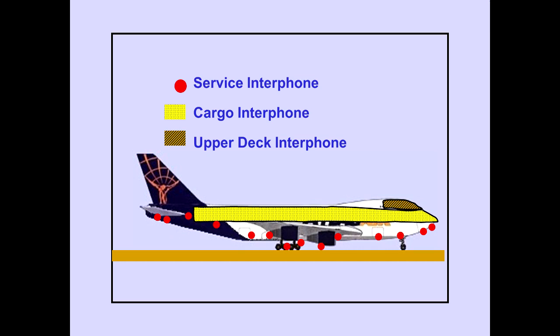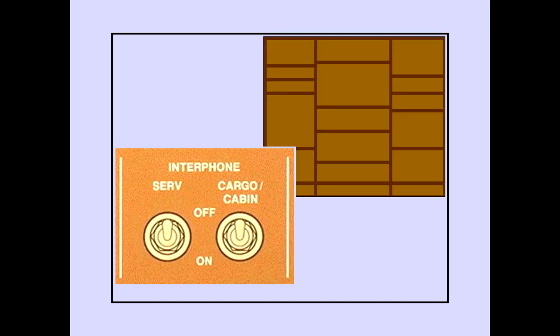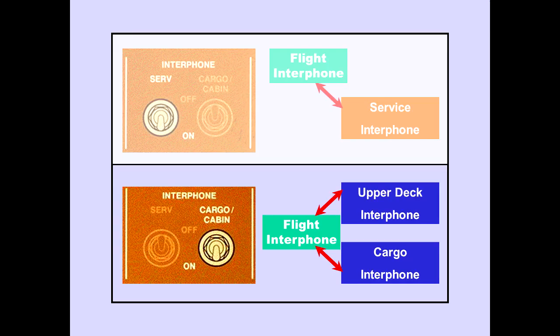Now let's discuss the service, cargo, and upper deck interphones. The service interphone provides communication between numerous service jacks located throughout the airplane. The cargo interphone provides communication between loading personnel. The upper deck interphone provides communication between the flight deck and the upper deck crew rest areas. The service and cargo cabin interphone switches are located on the overhead panel. With the cargo cabin interphone switch on, the cargo and upper deck interphones are connected to the flight interphone, and access is the same as access to the flight interphone.